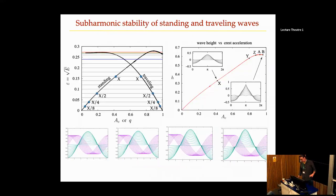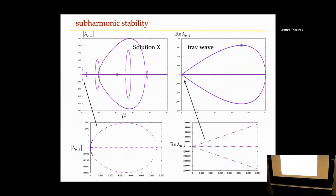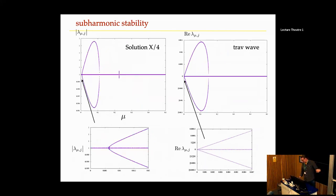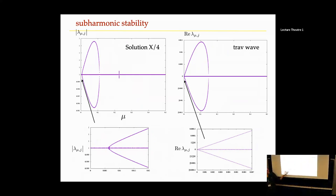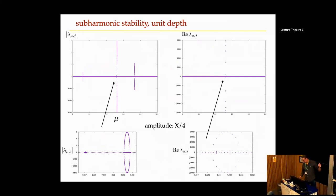Briefly, I'm looking at subharmonic stability of standing waves and traveling waves and comparing them. The familiar modulational instabilities for traveling waves in deep water appear, while standing waves seem to become unstable at a steeper slope. One standing wave case is modulationally unstable but another is modulationally stable — standing waves are quite different from traveling waves; there's no Benjamin-Feir instability for standing waves.